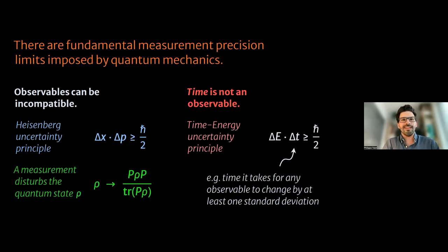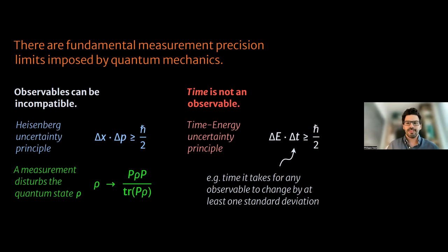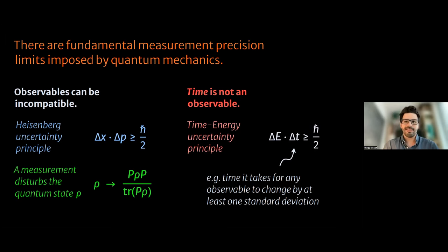In my title you might have seen the words time and energy. We're hitting against another aspect of quantum mechanics: there is no universal time observable in the same way that you have a position operator or a momentum operator. Time is itself not an operator in quantum mechanics. So when you want to establish some type of time-energy uncertainty principle, it's important to clarify a little bit more what we mean by the uncertainty of measuring time.